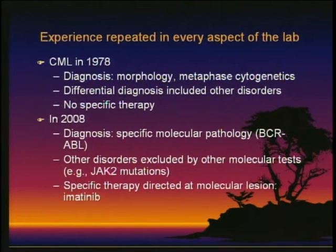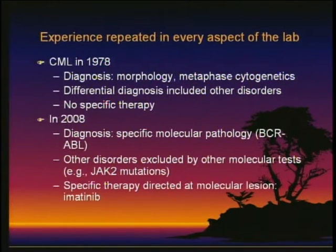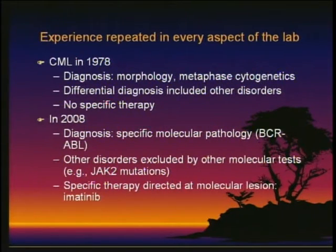Here's another quick example: the diagnosis of CML. In 1978, we used morphology and what we would consider today crude cytogenetics; the differential included other disorders and there was really no specific therapy. By 2008, the diagnosis uses a very specific molecular marker — BCR-ABL — other disorders are excluded by molecular tests such as JAK2 mutations, and specific therapy is directed at a molecular lesion by a specific medication. Because the lab can hone down right to that tumor and identify what it is, we can help our clinical colleagues with their therapy. They can't work without us, and we can't work without them.